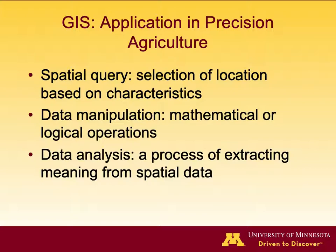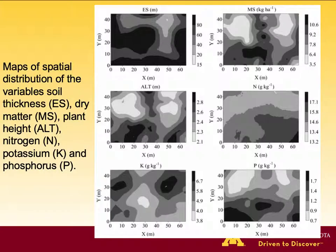When GIS is used in precision agriculture, the following basic GIS functions are all very important: spatial query, data manipulation, and data analysis. An example of precision agriculture GIS layers includes six layers: soil thickness, dry matter, plant height, nitrogen, potassium, and phosphorus. Among them, can you tell which changes the most frequently?